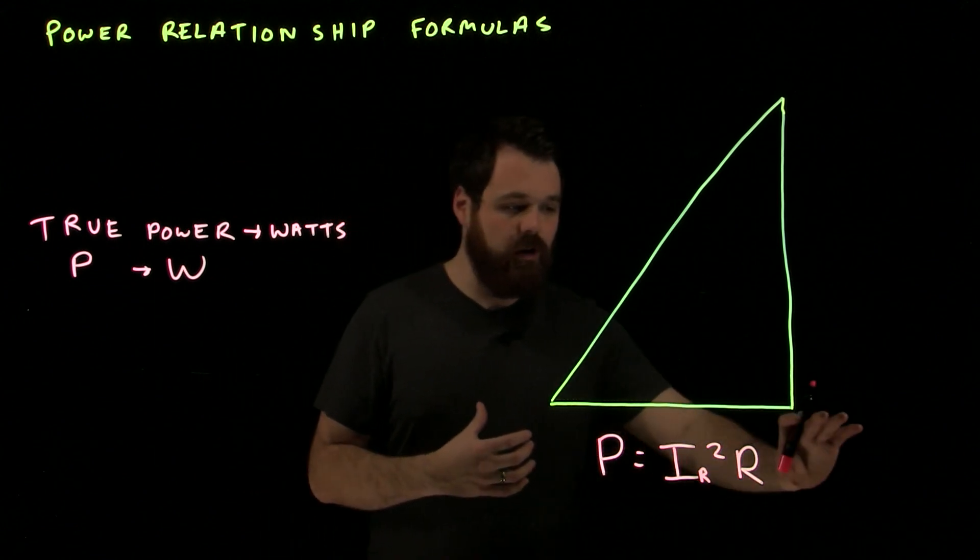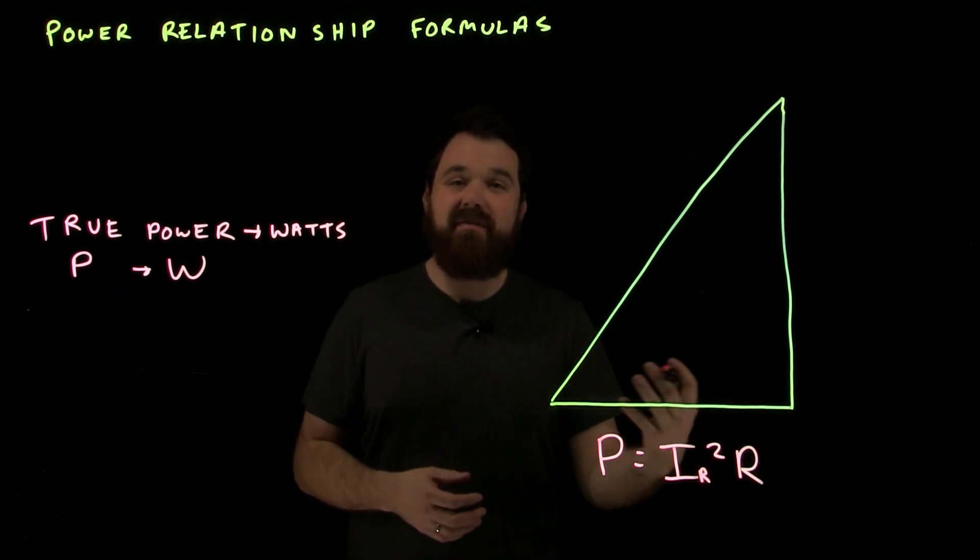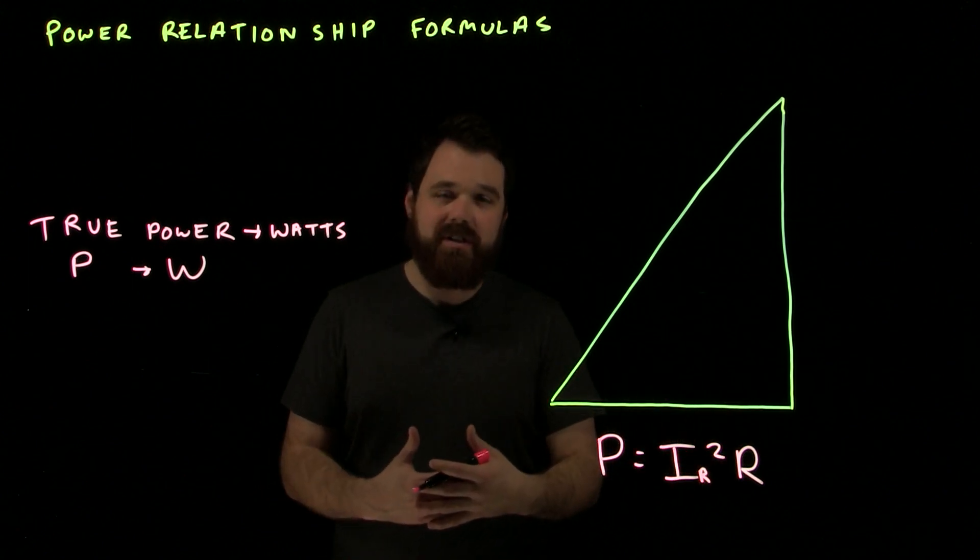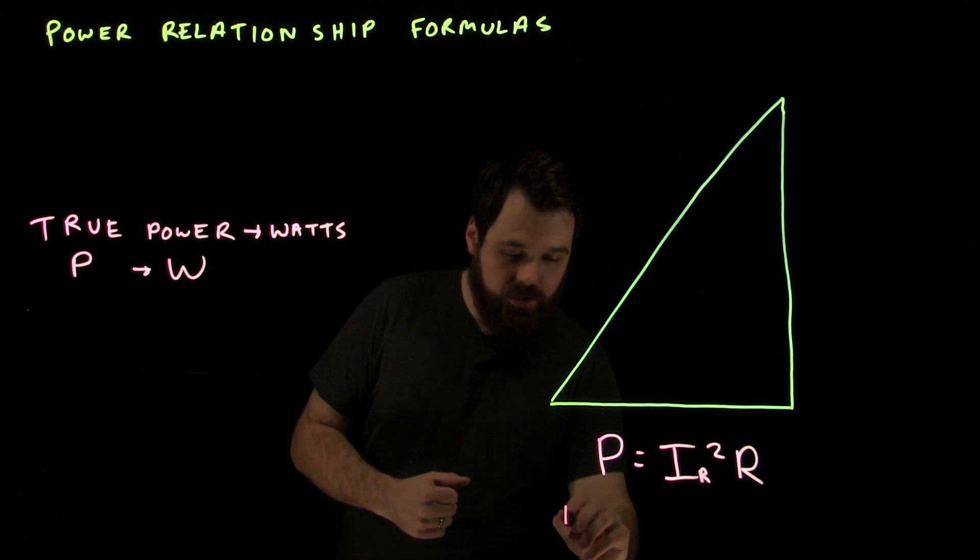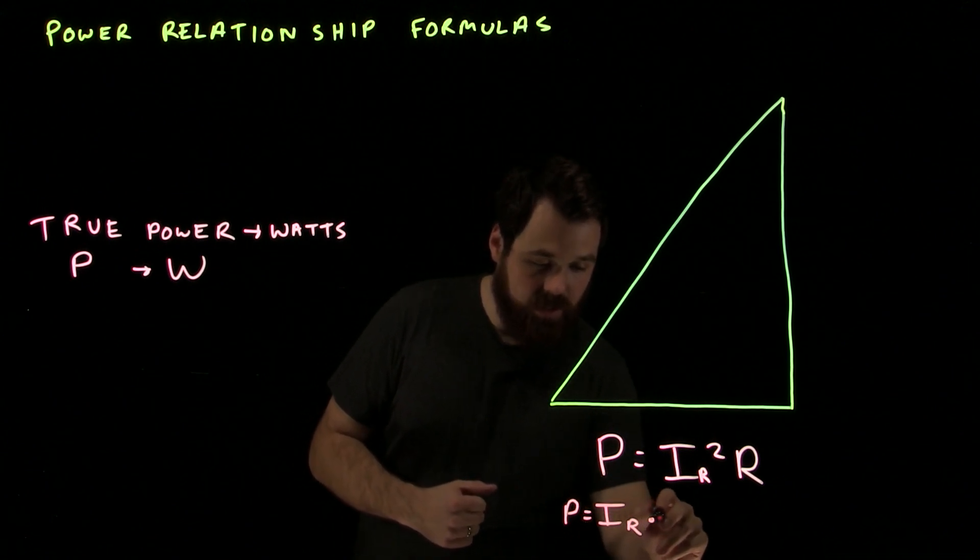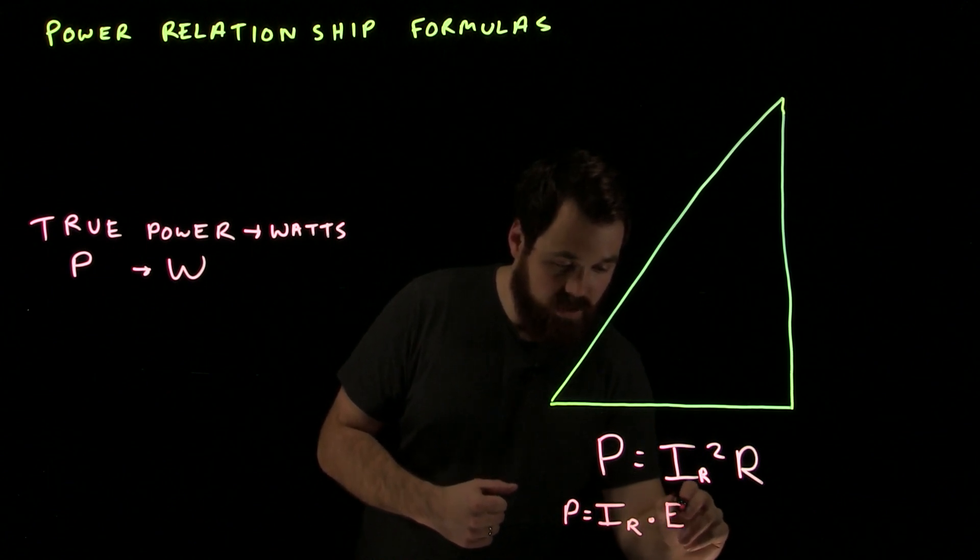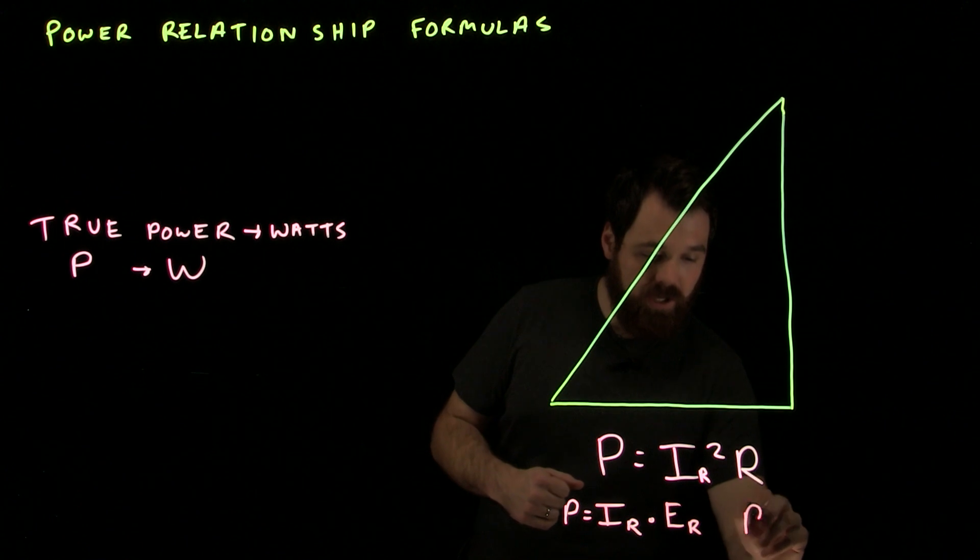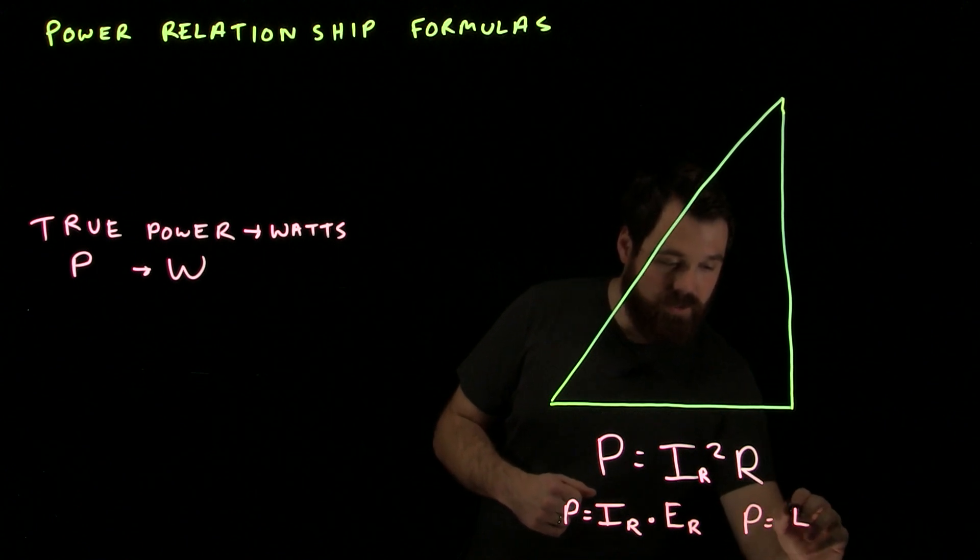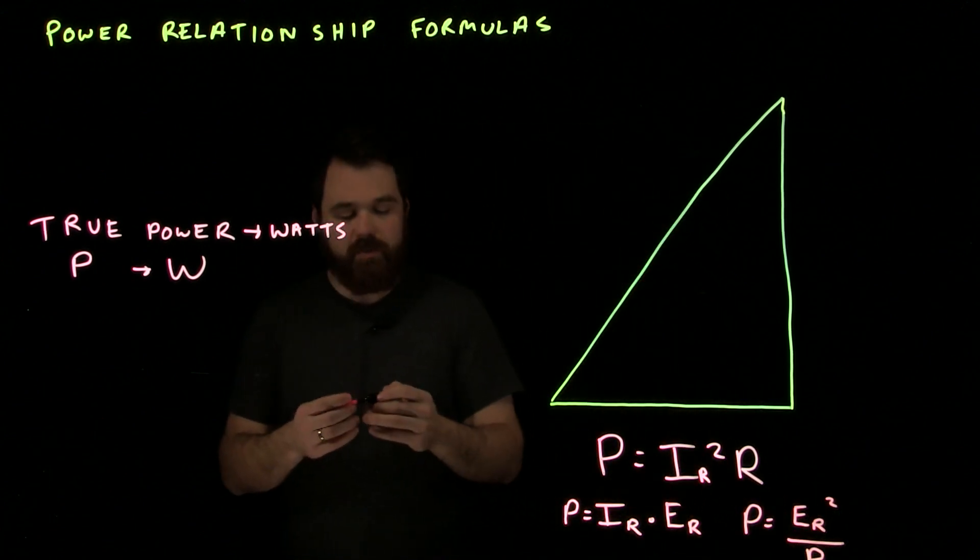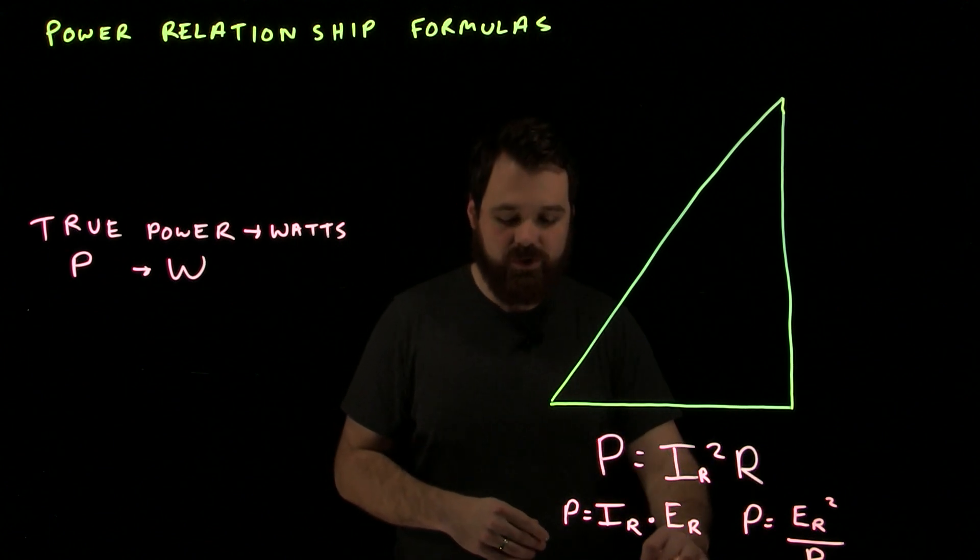Our true power goes here on the bottom side of a triangle or in-phase because it's coming from that voltage and current, which are both in-phase with each other and the resistance. We can also go P equals I of the resistance times by the voltage of the resistance, or we can go P equals the voltage of the resistance squared divided by the resistance. But still, your most common one is going to be that P equals I squared R.